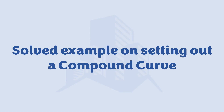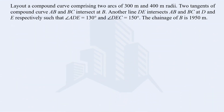In this video we are going to solve an example related to the setting out of a compound curve. The problem involves a compound curve with two arcs of 300 meter and 400 meter radii. We are also given the back and forward tangents intersecting at point B, a third line D intersecting AB at D and BC at E, angles ADE and DEC, and the chainage at point B.